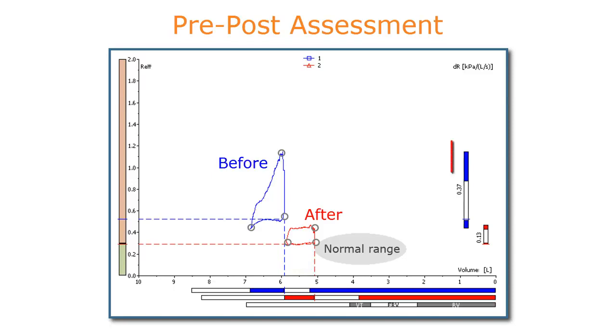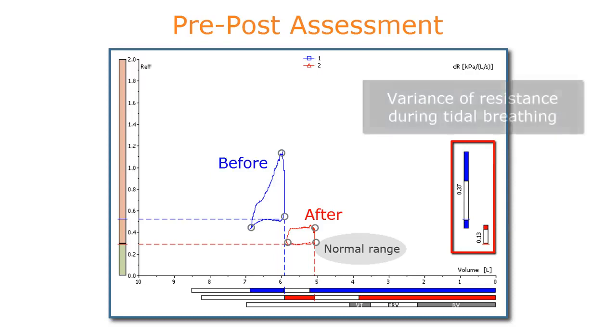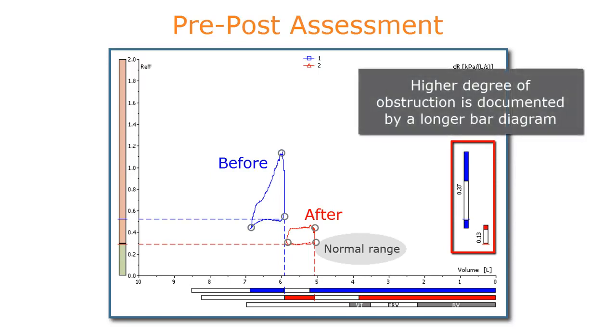The last feature we want to point out is the bar diagram to the right of the resistance-volume graph, which illustrates the variability of airways resistance during tidal breathing. A higher degree of obstruction is usually associated with greater variance of airways resistance within a breath, and therefore documented by a longer bar diagram.